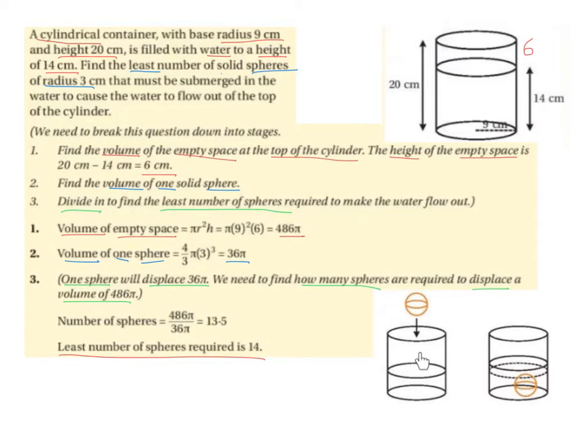If we have a look at this diagram down here, this is our cylinder that we're given. If we imagine that this is where the height of the water is at the beginning, when one sphere is dropped down, the water level rises, and the volume of water that rises is equal to the volume of the sphere. In order for the water to fill right the way to the top and start to come out over the side, we need to put 14 spheres inside the cylinder.